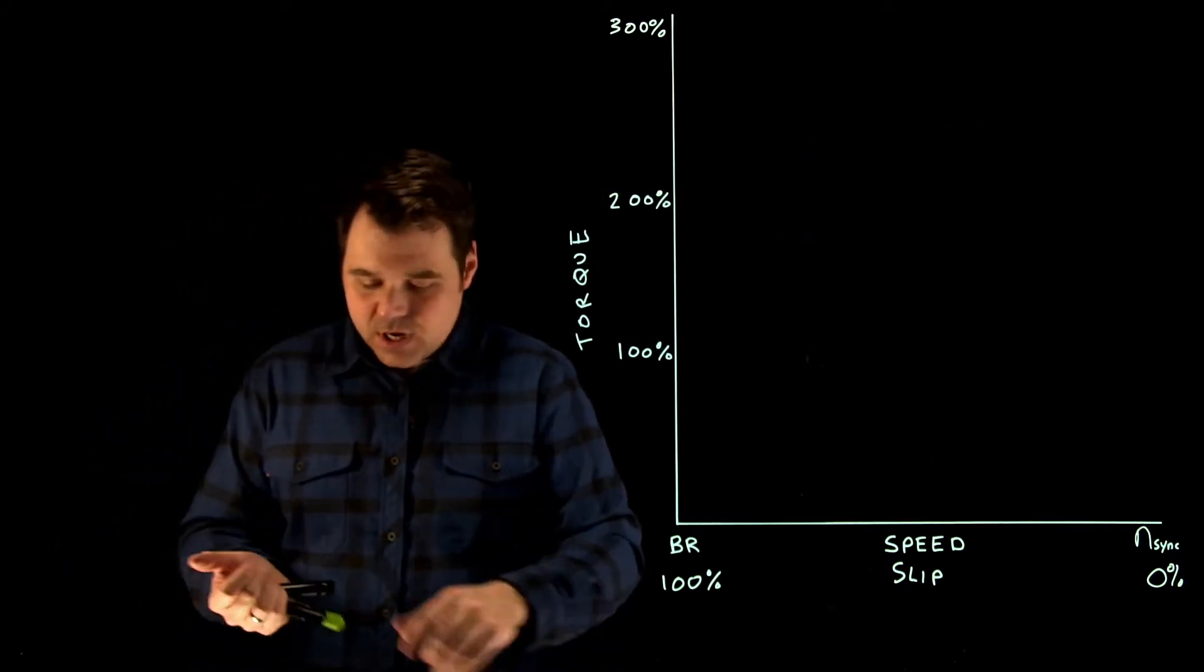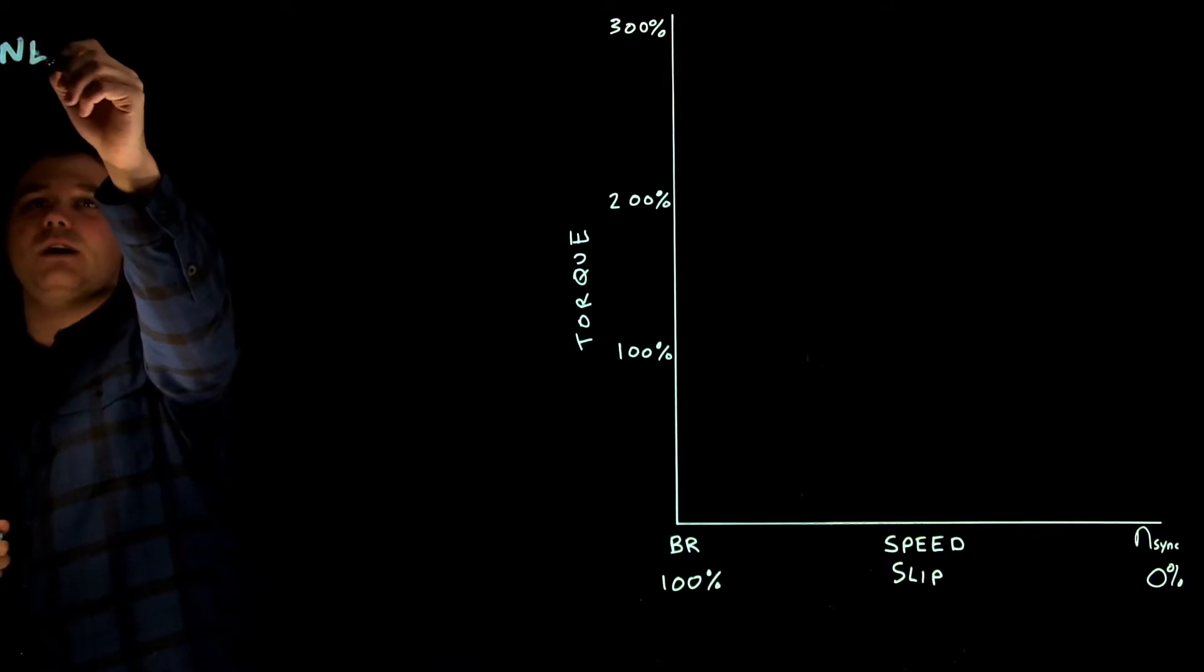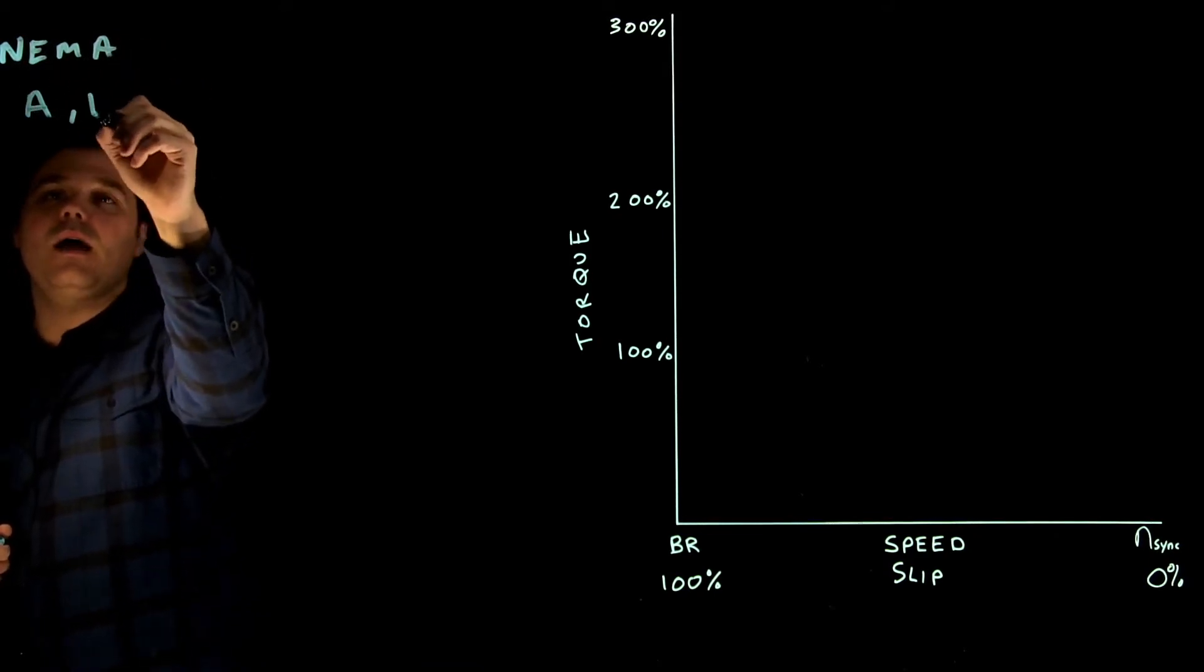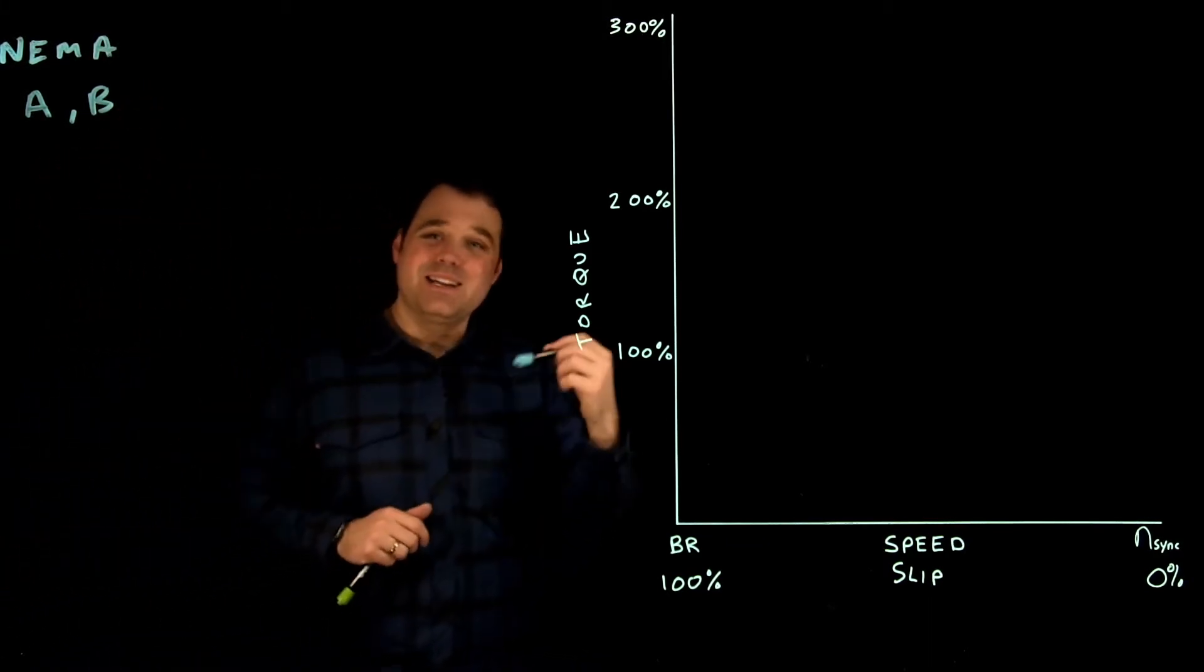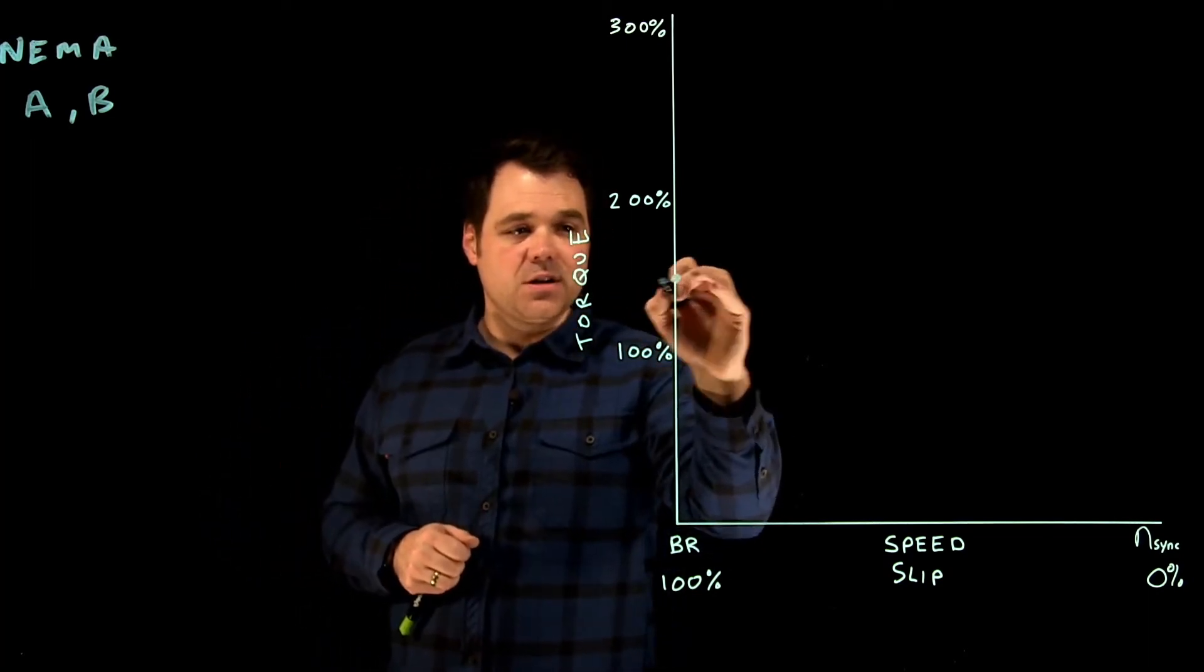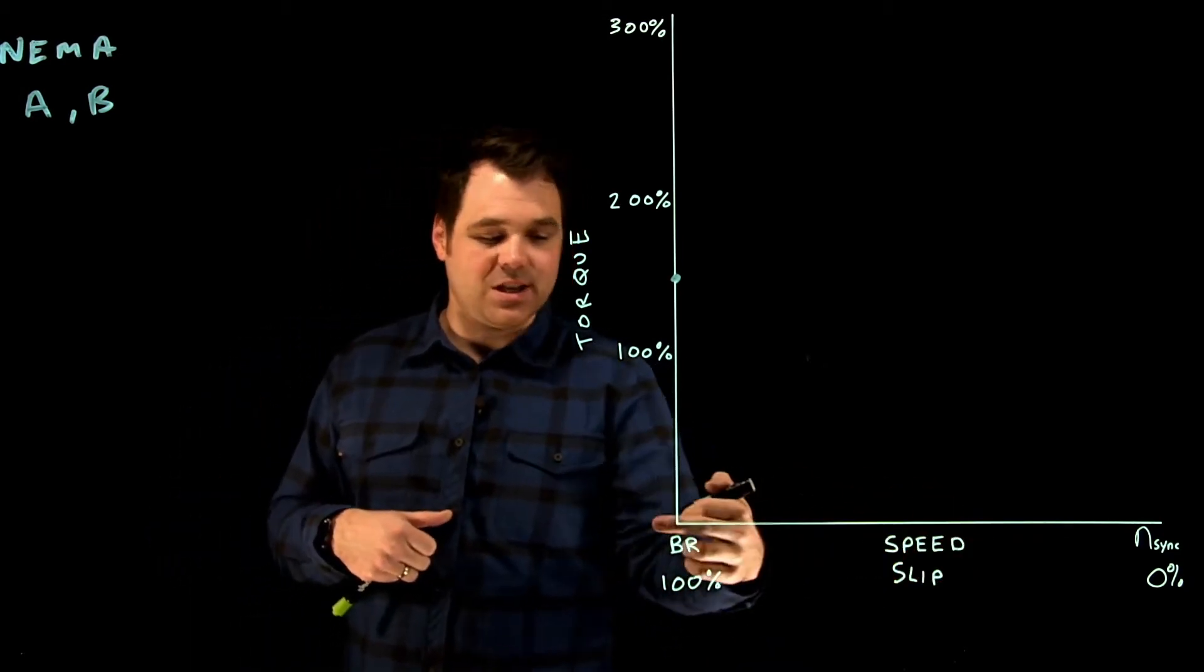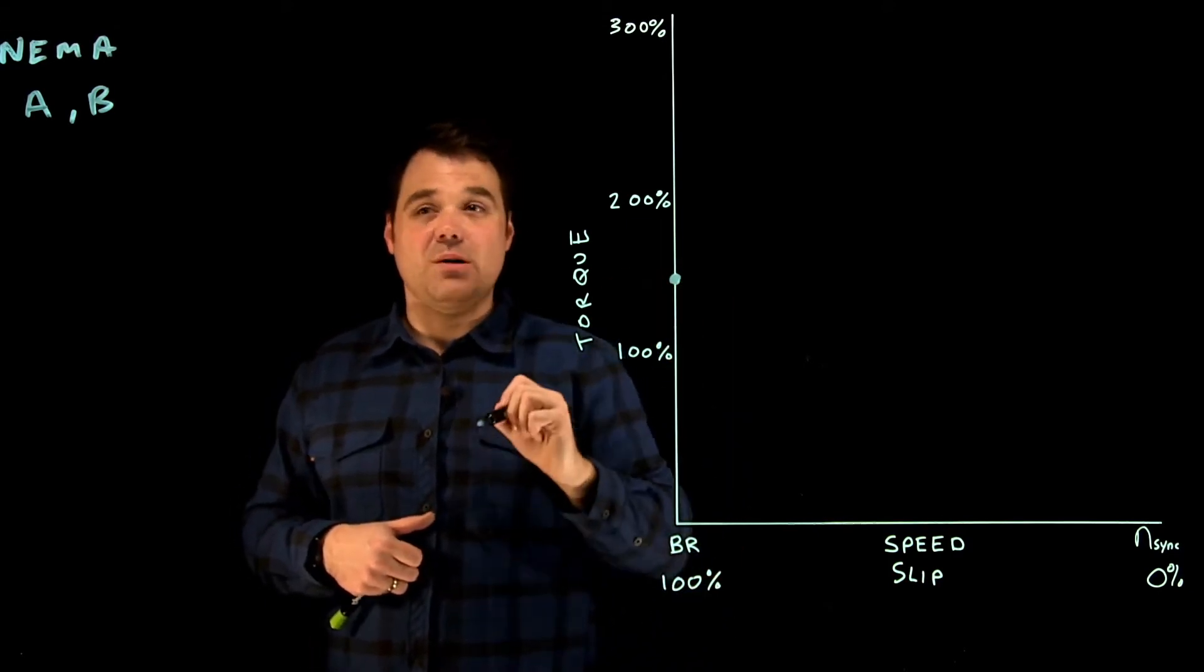So first off, NEMA design A and design B. These are all our NEMA designs. NEMA A and B operate pretty much identically. They both have about 150% starting torque, which would be at a blocked rotor when my speed is at zero or my slip is at 100%. That would be at start.